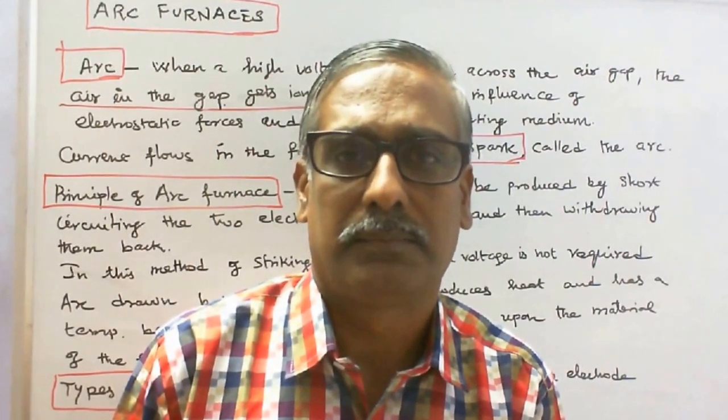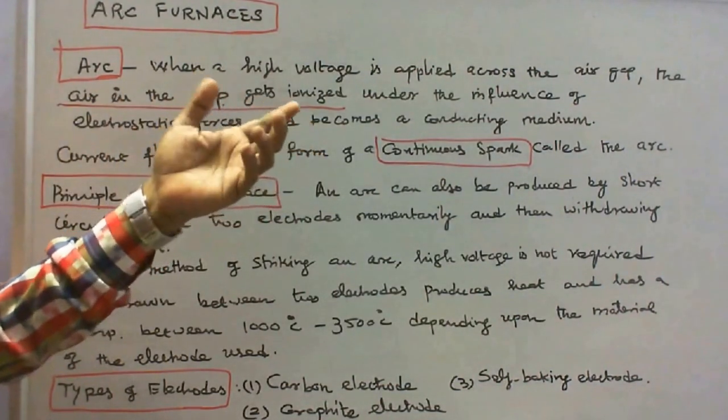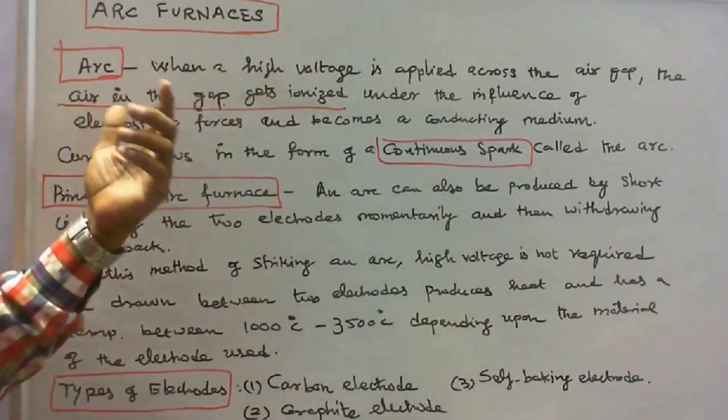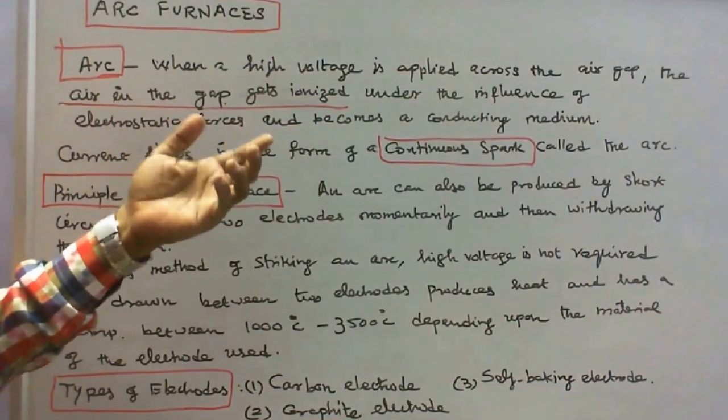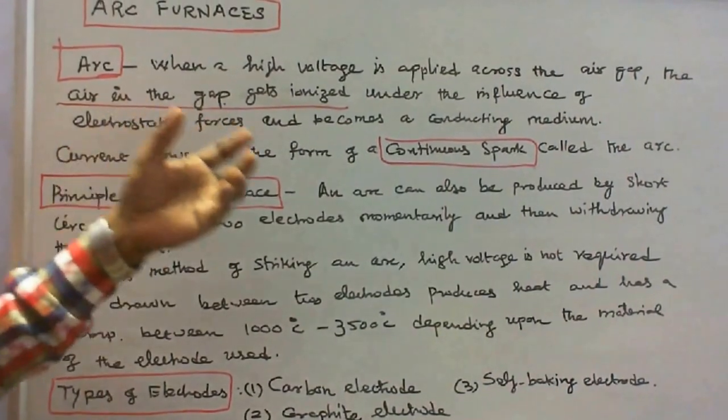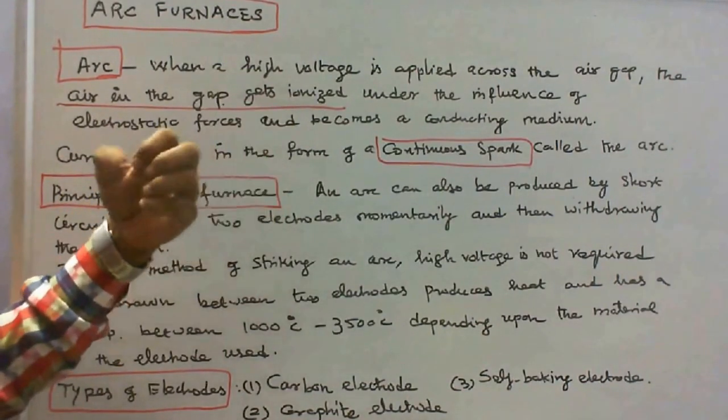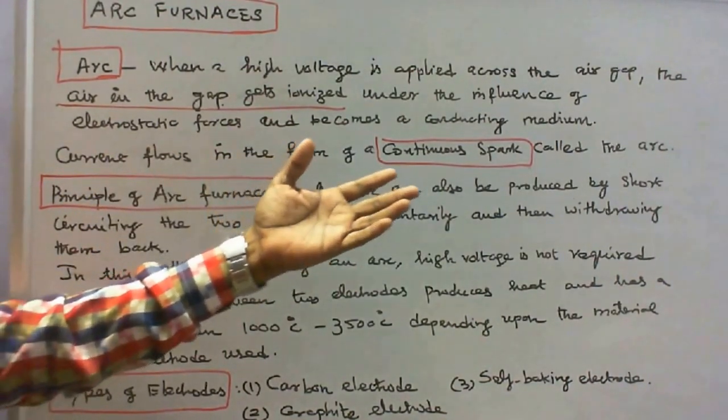What is meant by electric arc? When a high voltage is applied across the air gap, the air in the gap gets ionized under the influence of electrostatic forces and becomes a conducting medium. Current flow is in the form of a continuous path called the arc.